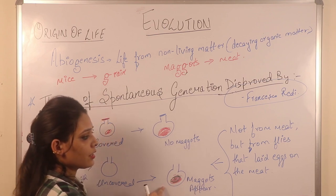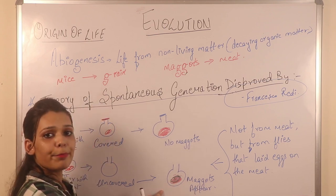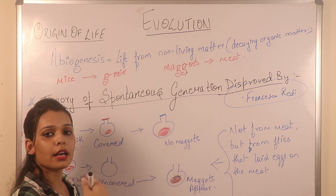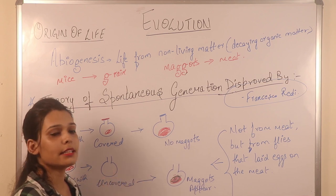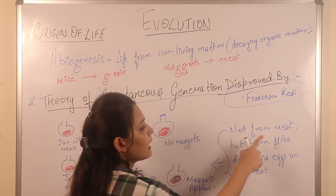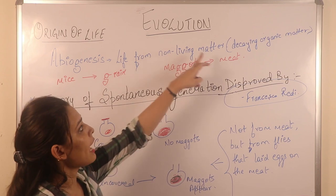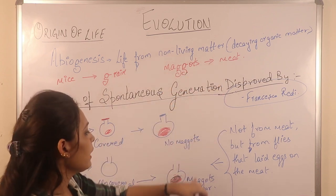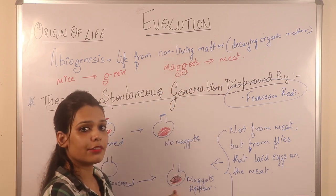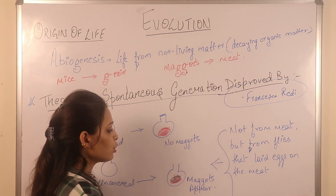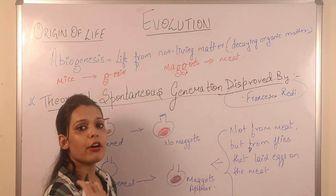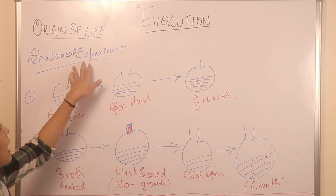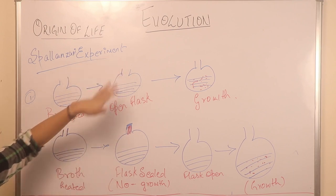This proved that one life is formed from another pre-existing life. Life is not formed from meat or from decaying organic matter alone — it is formed from another pre-existing life. Now we will learn about the experiment of Spallanzani.